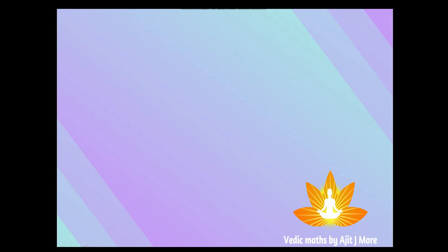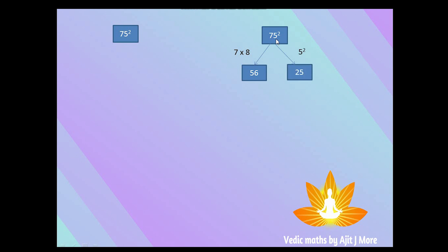Let's see one more example: 75 squared. What comes before 5? That is 7. What is the subsequent digit after 7? That is 8. Multiply 7 with 8 — seven into eight is 56, that is your first part. The second part is 5 squared, which is 25. Combine both: the answer is 5625.